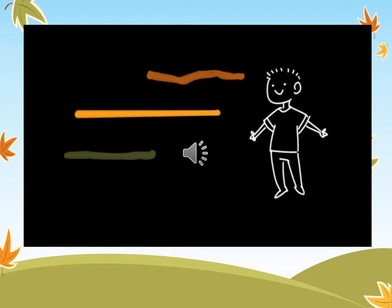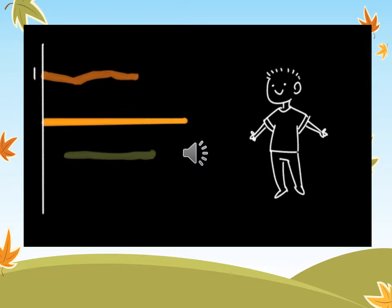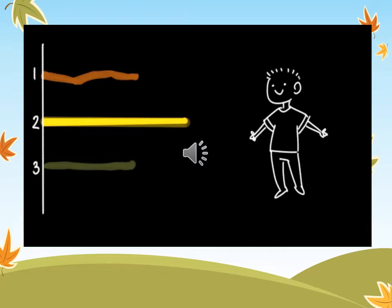Let's arrange them so they all go in the same direction. There, that's better. But it's still hard to compare their lengths. It's very easy to see that stick number 2 is the longest — we'll mark it with a check. But it's hard to tell which is shortest: stick number 1 or stick number 3. We need a strategy.